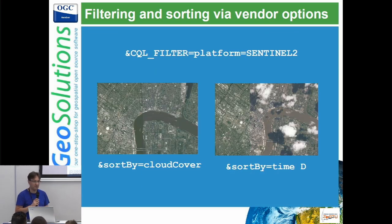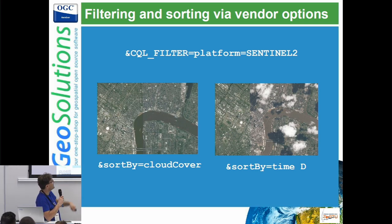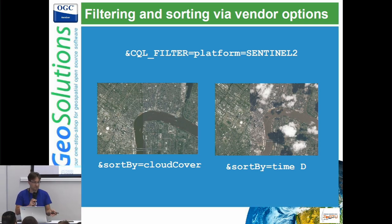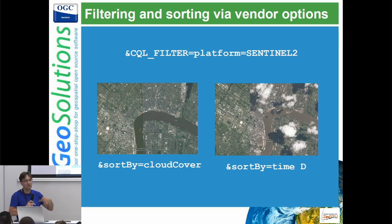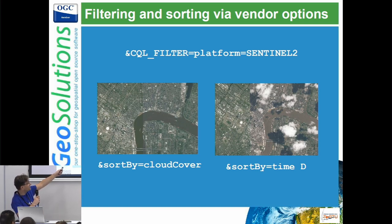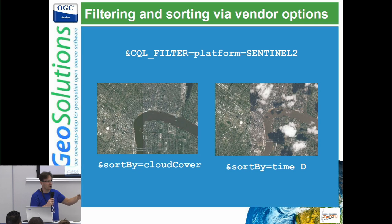We have vendor options to perform filtering — for example, adding a SQL filter like platform equals Sentinel-2, or cloud cover less than 30%, and it all turns into filters against the index table to look up the right images. We also have a sort-by vendor option in WMS, which allows sorting on whatever field you want — to have the cloudless images on top, or the most recent on top.